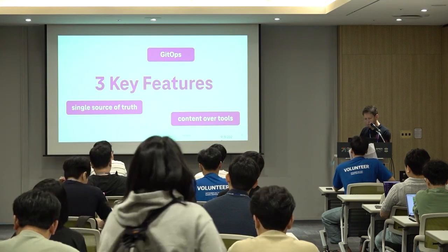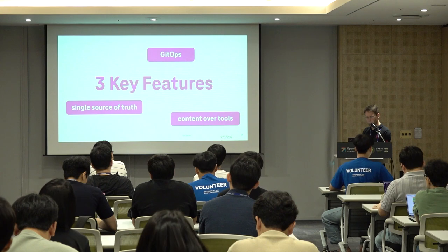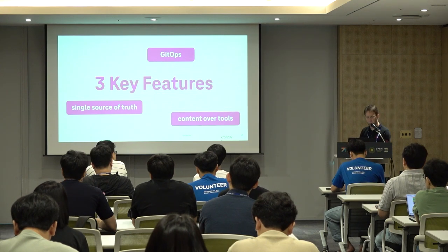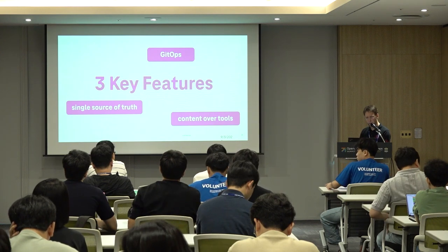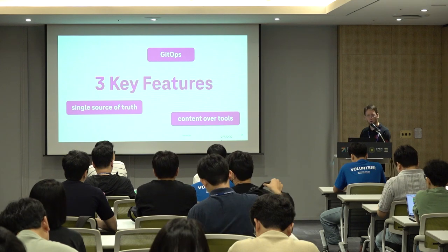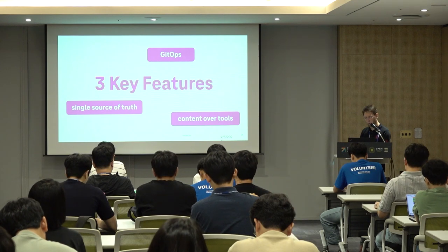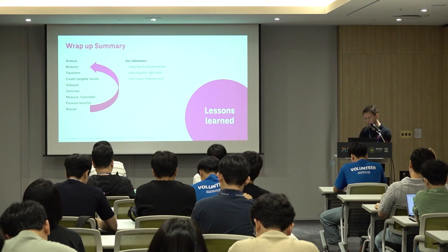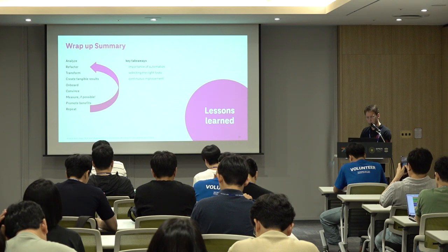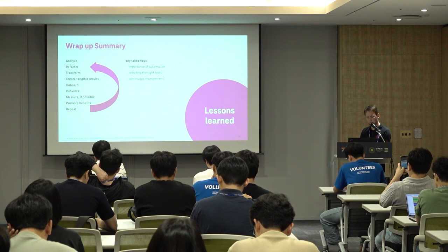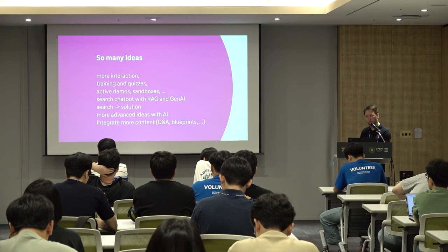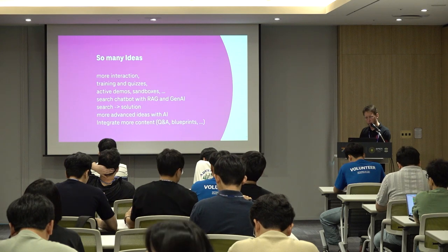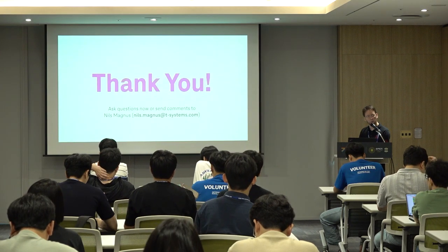That was my presentation. Let me summarize: we identified three key features. One is the idea of GitOps — have a single source of truth, and focus on the content, content over tools. Here's the summary of the smaller steps as well. And with that, I skipped the extra ideas we have for the future, but I would like to thank you very much.